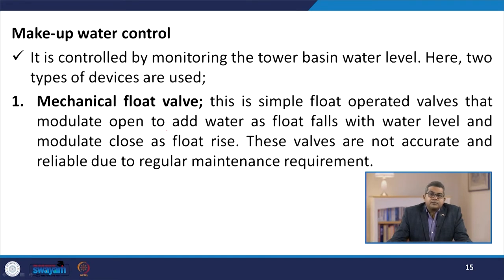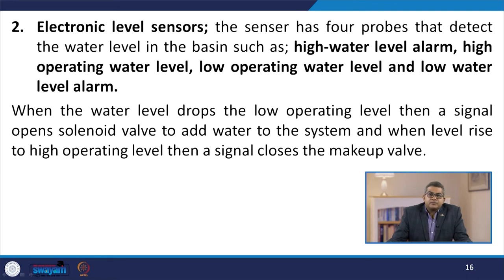The makeup water control is controlled by monitoring the tower basin water level. There are two types of devices used. One is the mechanical float valve — a simple float-operated valve that modulates open to add water as the float falls with the water level, and modulates closed as the float rises. These valves are not accurate and reliable due to the regular maintenance requirement. The second is the electronic level sensor, which has four probes that detect the water level in the basin: high water level alarm, high operating water level, low operating water level, and low water level alarm.